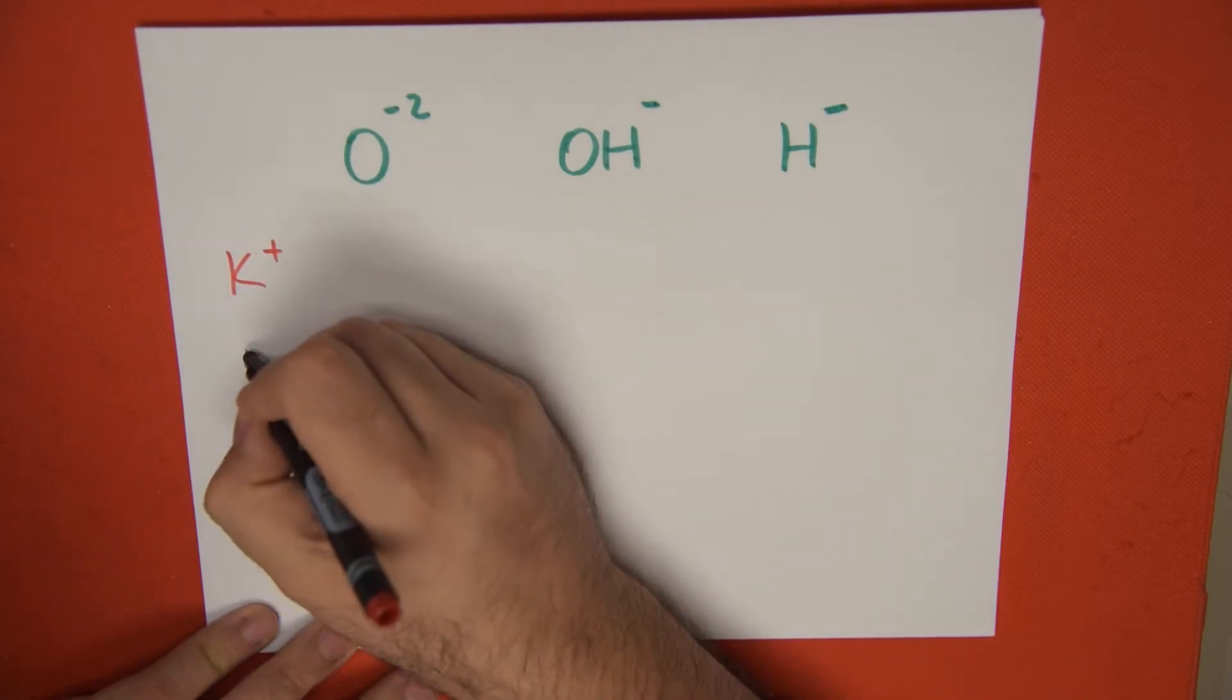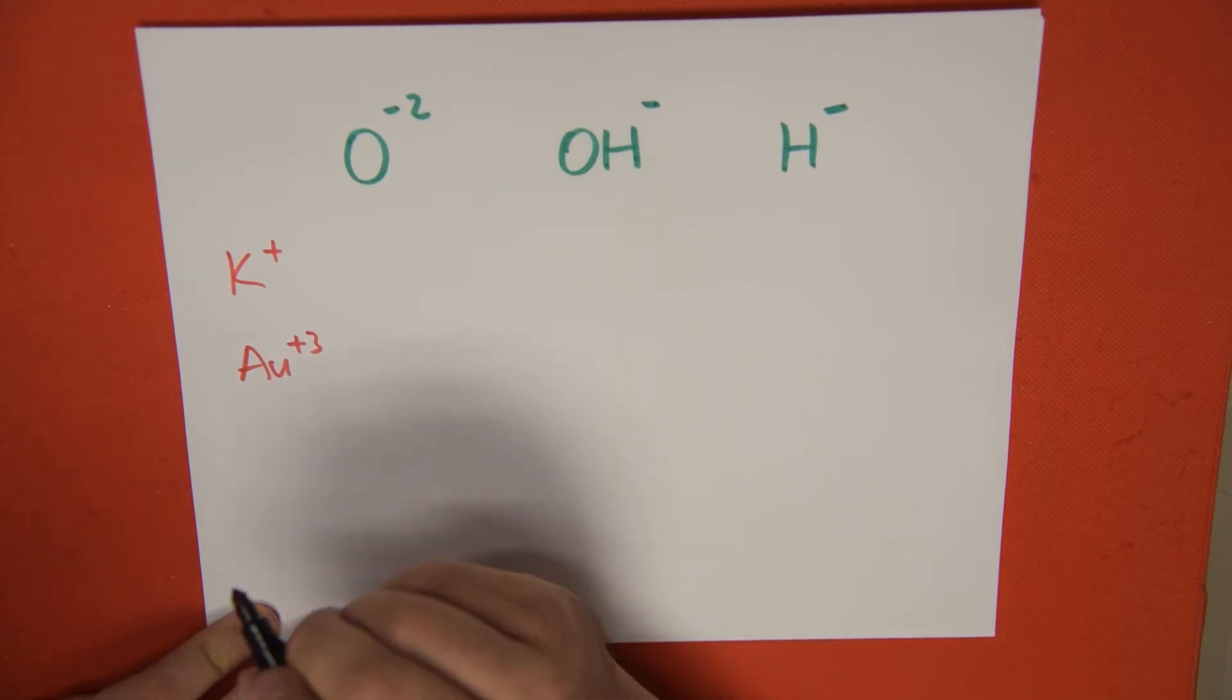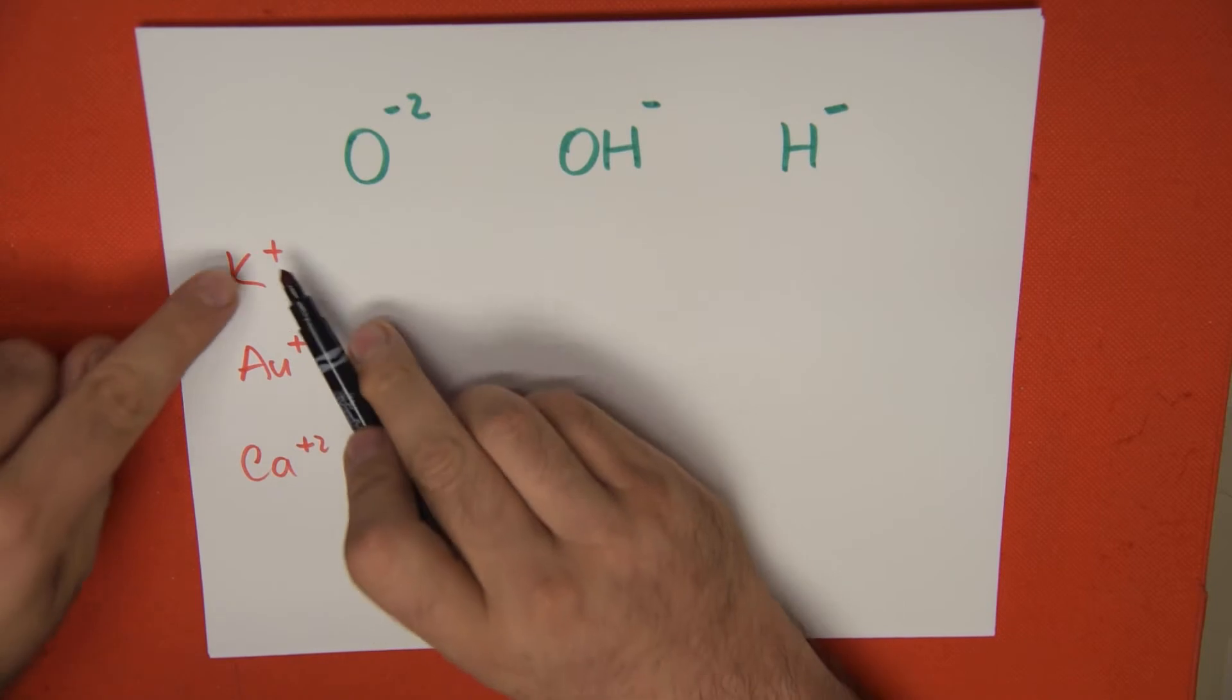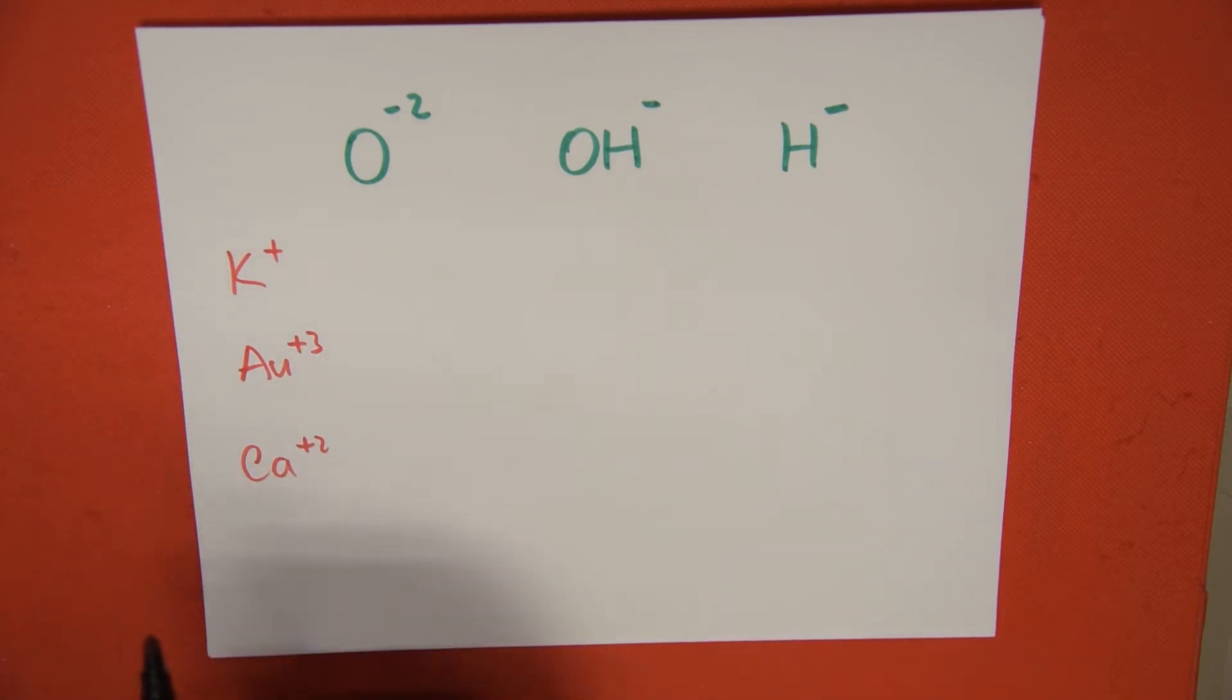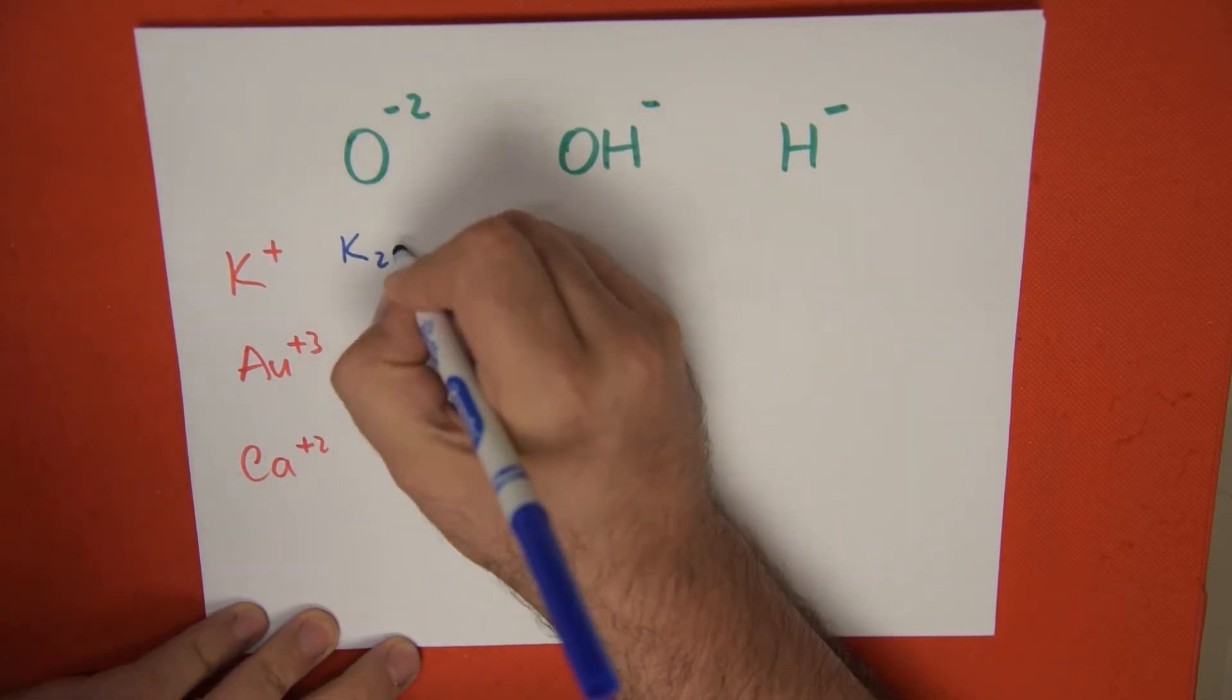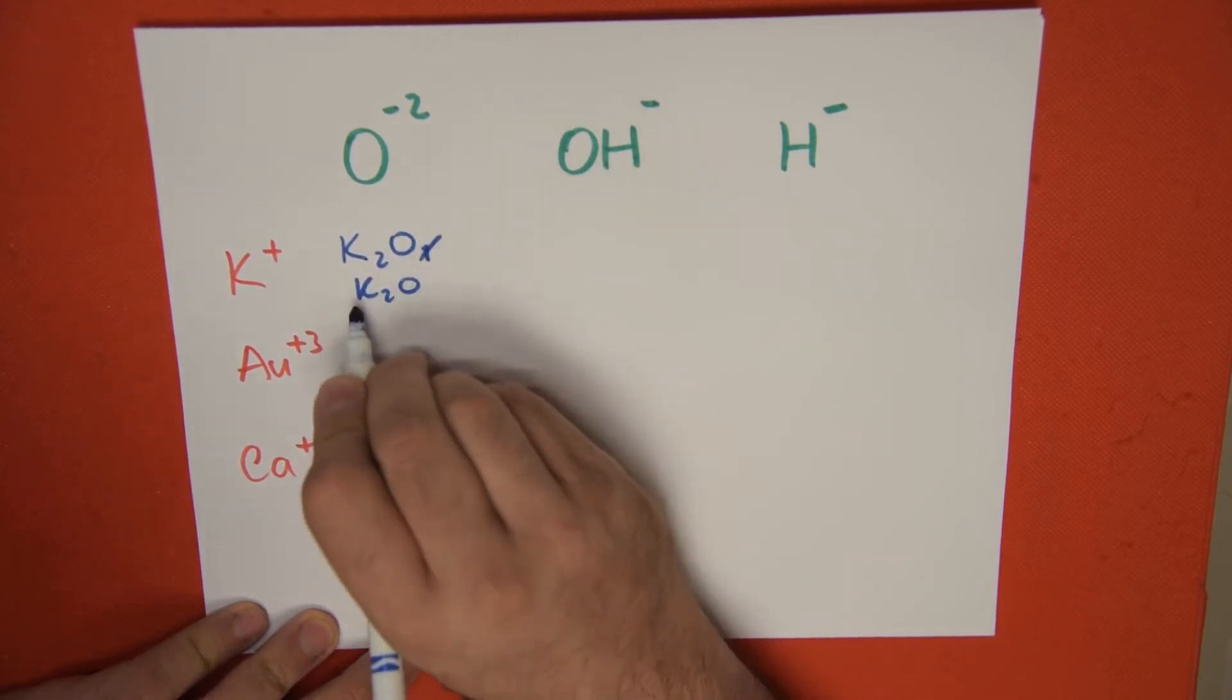Let's choose some metals randomly. Potassium, which is +1. Gold, three, which is +3. And, for example, calcium, which is +2. So whenever I mix these two, again, I'm going to do this really quickly so that you guys can have a quick review. And we're going to have K2O1, the one's not written, so we have K2O, potassium oxide.